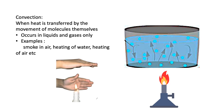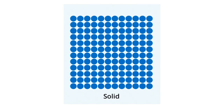Convection cannot take place in solids because in a solid there is very little space between the molecules - they cannot move around. For convection to happen, the molecules need to move. Since solid molecules are tightly packed with almost no room to move, no convection takes place.